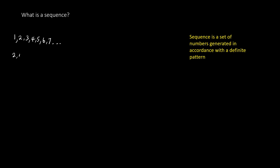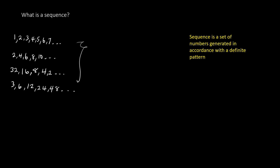We can also have 2, 4, 6, 8, 10. We can also have 32, 16, 8, 4, 2, and so on. Also, looking at 3, 6, 12, 24, 48. We can see that these sets of numbers are all sequences. If you study each set of numbers, we are going to see that each of them has a relation. Here we have 2, 4, 6, 8, 10 — each number generated in accordance with a particular pattern.